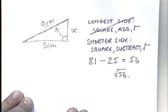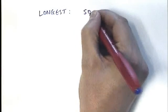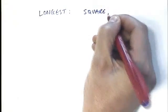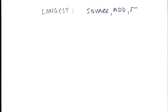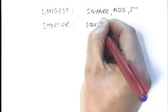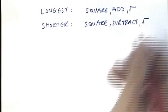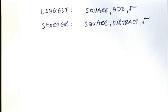To summarise both rules: if you're finding the longest side — the hypotenuse — you square, add, and then square root. If you're finding one of the shorter sides, you square, subtract, and then square root. That's the basic difference — adding to find a longer side, subtracting to find a shorter side.